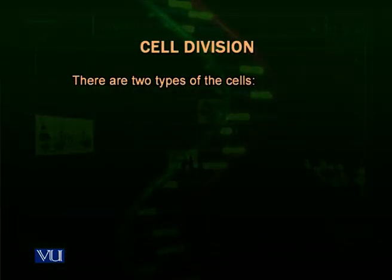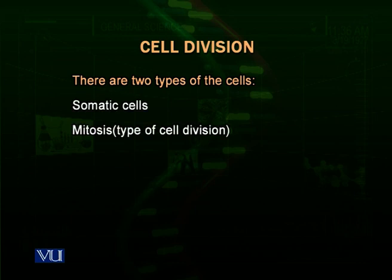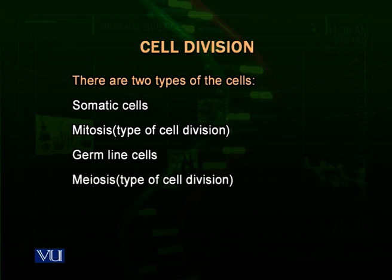There are two types of cells to consider for division. Some cells are called somatic cells, and other cells are called germline cells. Somatic cells are most of the cells of the body other than the gametes. Germline cells are the gametes, present in the reproductive organs — testes and ovaries — and they are responsible for making the next generation.